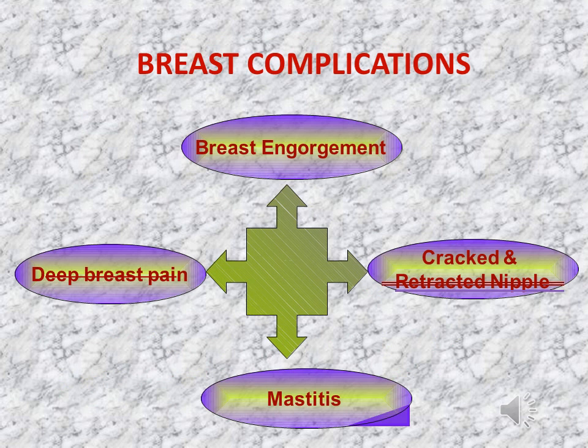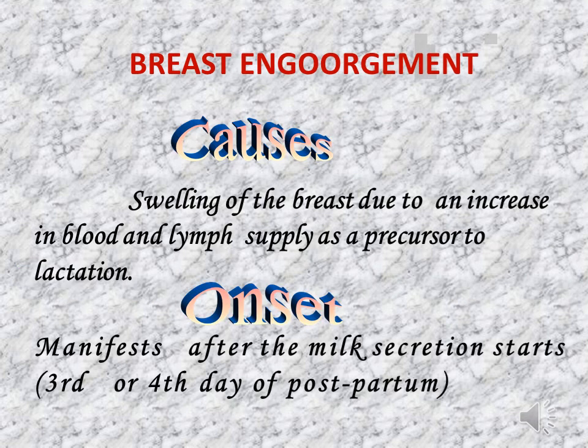Other breast complications include breast engorgement, cracked and retracted nipple, mastitis, and deep breast pain. Breast engorgement causes swelling of the breast due to an increase in blood and lymph supply as a precursor to lactation. Onset: It manifests after milk secretion starts on the third or fourth day postpartum.